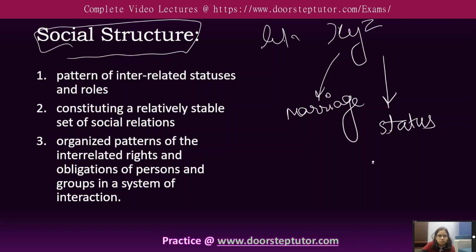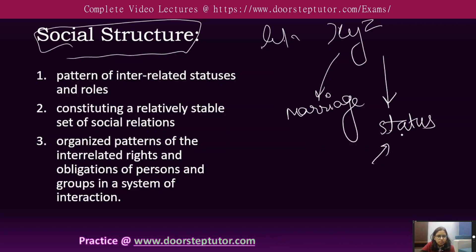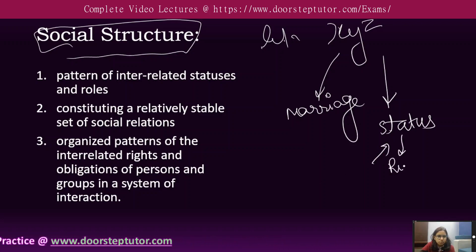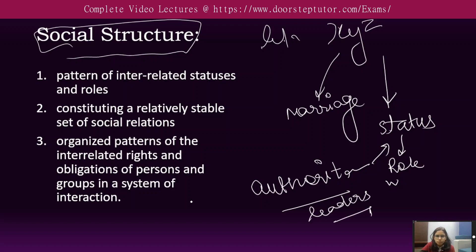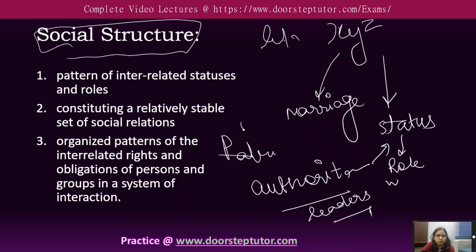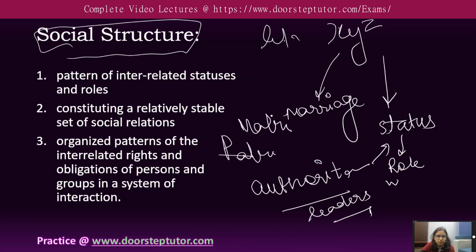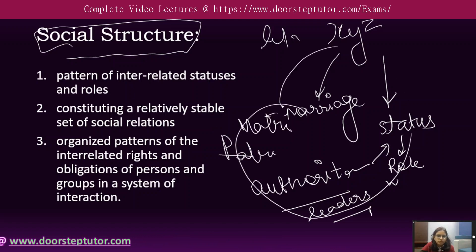Like suppose the women have higher status here, and with that status come attached roles. So women have a more authoritarian role here, which is commonly held by men in most societies. Women are the leaders here, and suppose the lineage followed is matrilineal and not patrilineal. That is basically the social structure of this XYZ society.